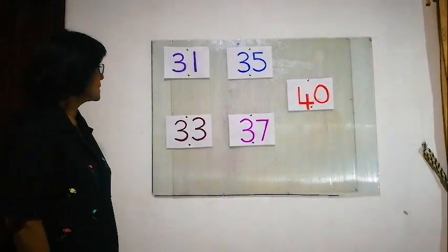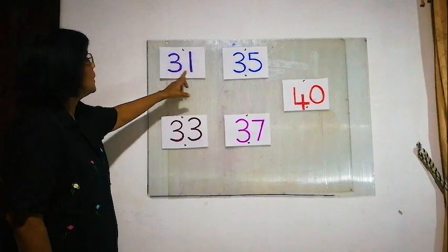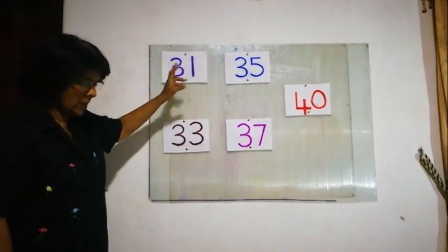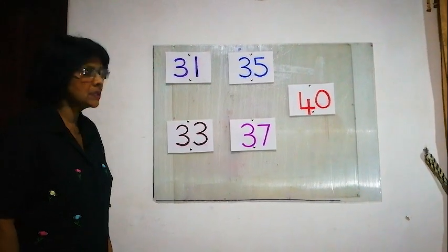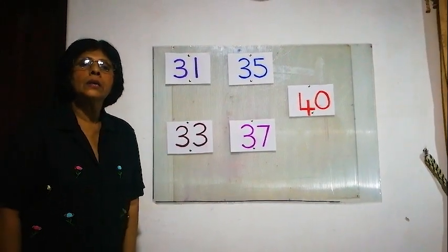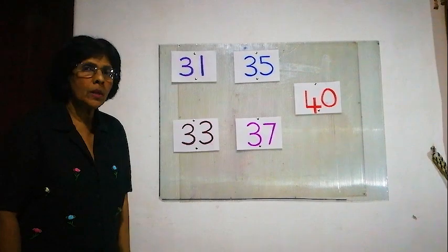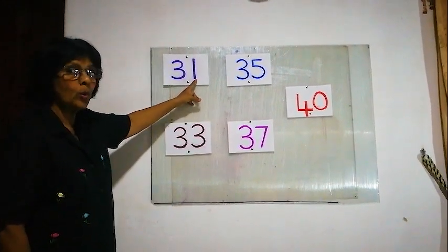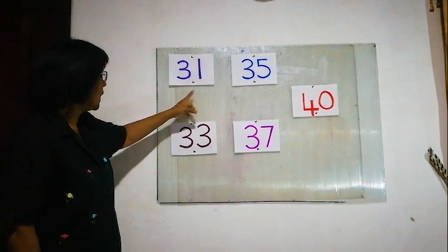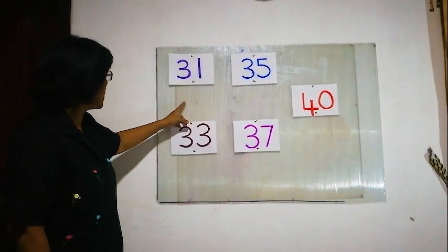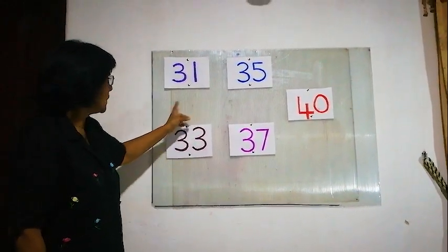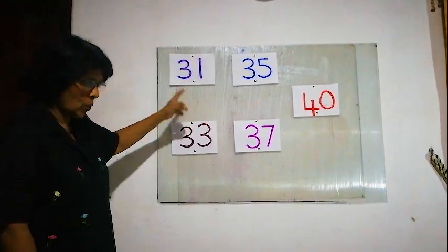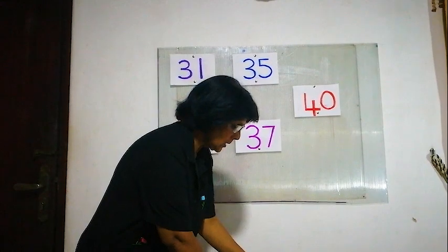Now here the first number is 31. We have to find the next number after 31. The first missing number is 32. 31, 32. Now we will find 32.